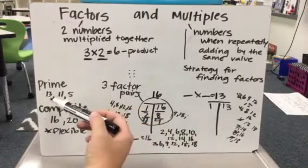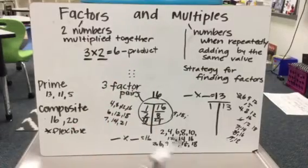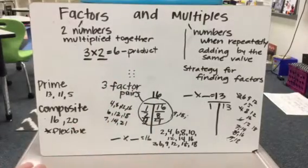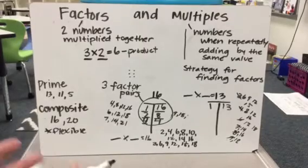But if I have 13 chairs, I'm not going to be able to make equal groups. I'm always going to have unequal groups. So that's kind of how it affects you in real life.